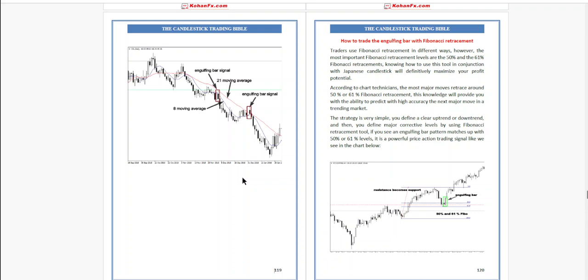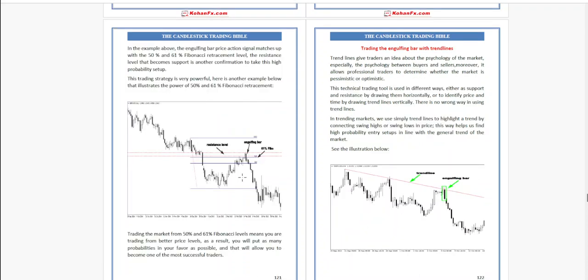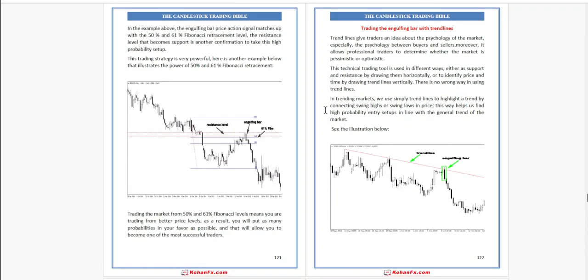You identify a clear uptrend or downtrend and then define major corrective levels using the Fibonacci retracement tool. If you see an engulfing bar pattern that matches up with the 50% and 61% levels, it is a powerful price action trading signal. The resistance level that becomes support is often confirmed to take the high probability setup.